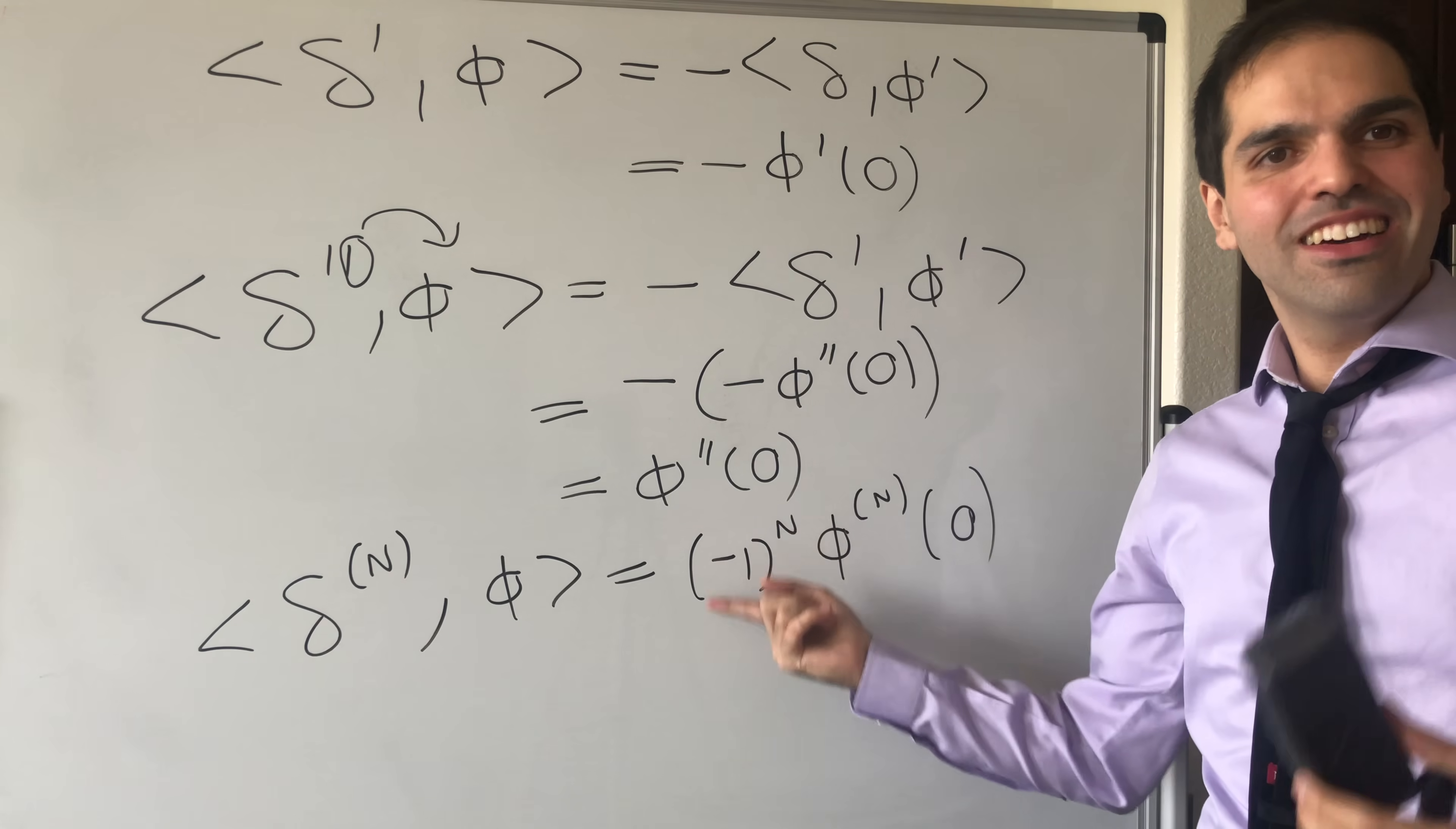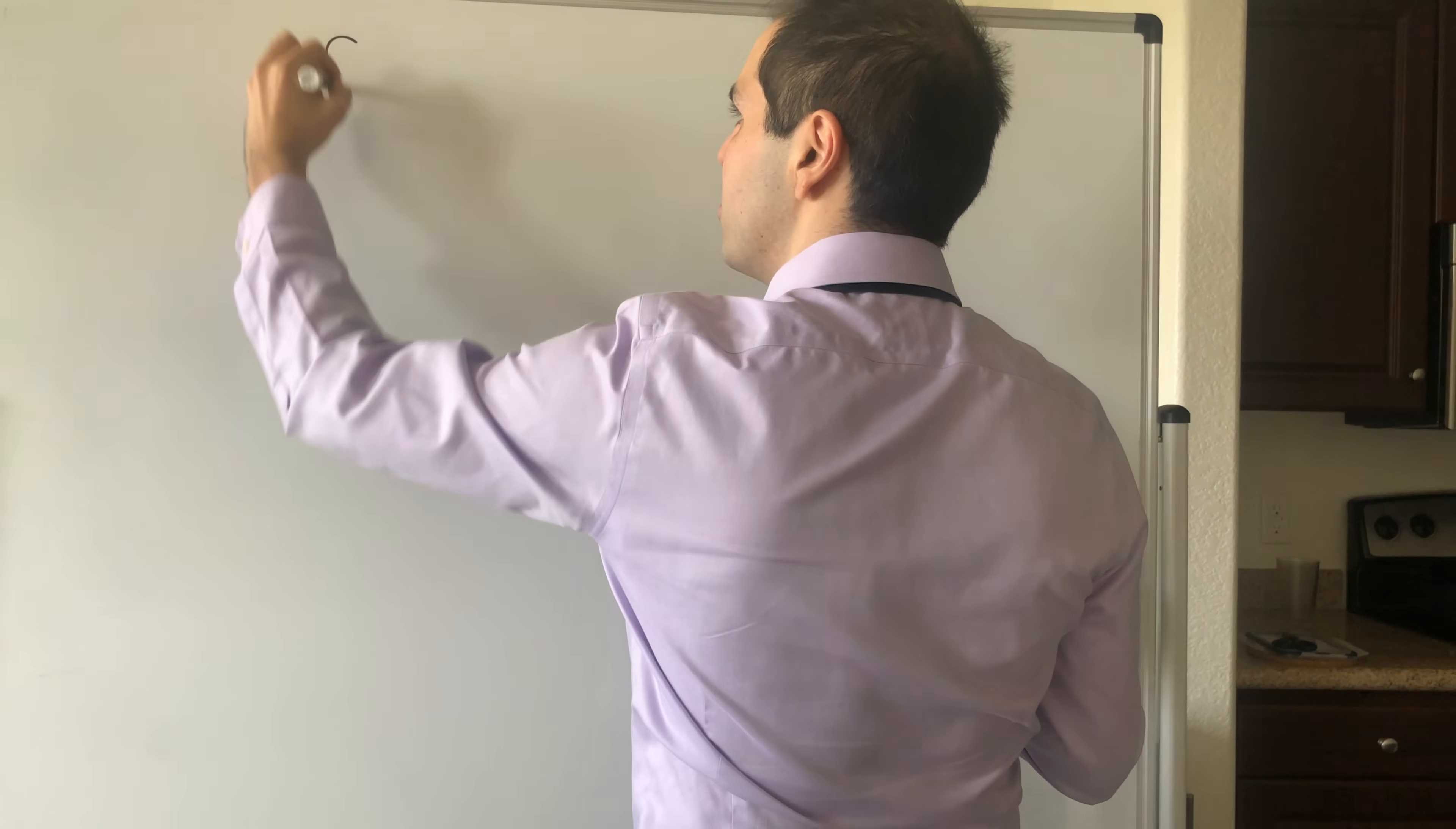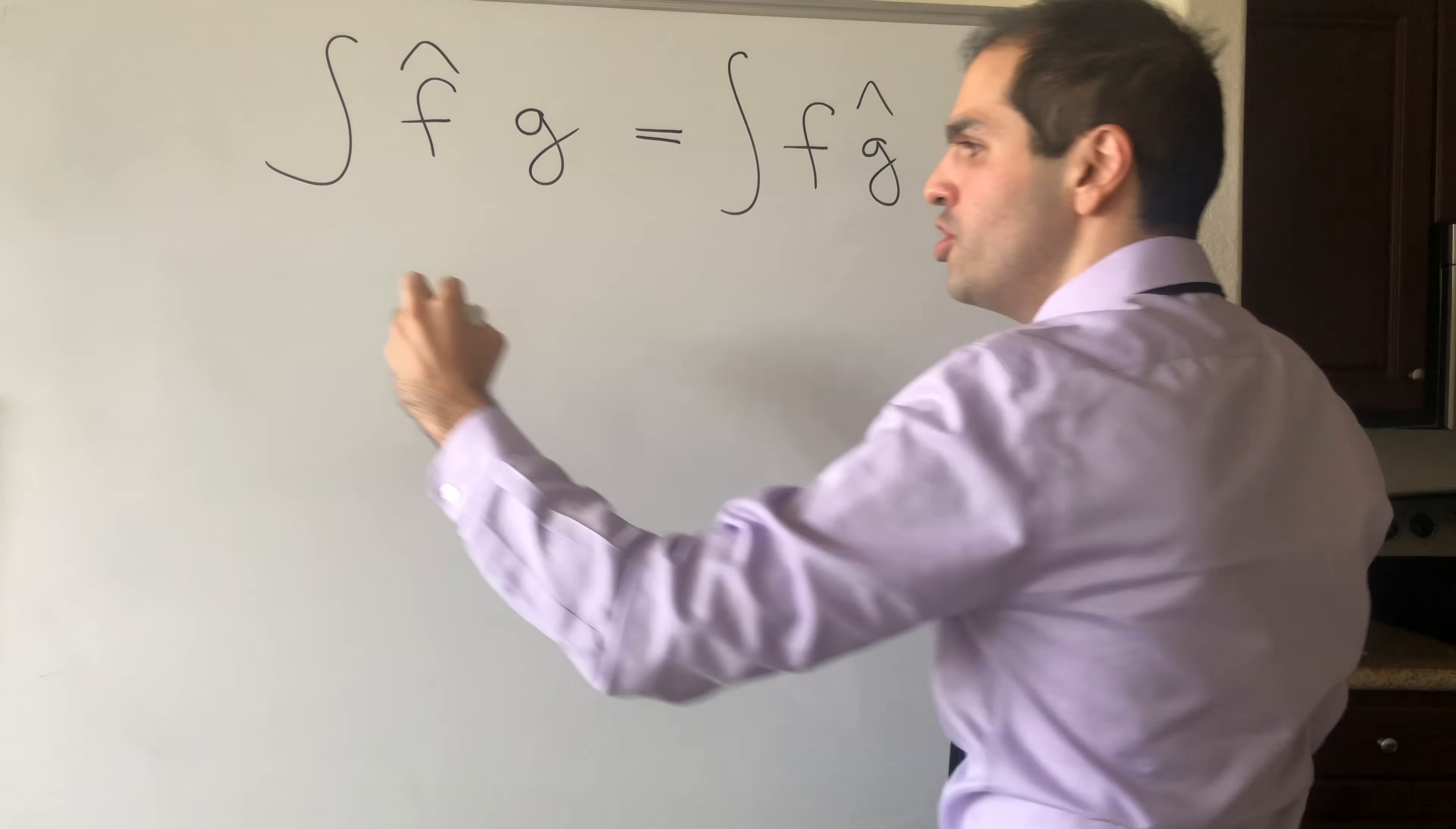And the thing is, the fun doesn't stop here because it turns out you can not only define the derivative of the Dirac delta but also the Fourier transform, simply as follows. Because there's this wonderful thing called the Plancherel formula, which simply says the following: if you take the Fourier transform of f and multiply it by g and integrate, this is the same thing as f times the Fourier transform of g. Possibly with some constant, but let's just normalize it so that the constant is one.